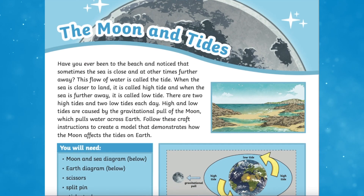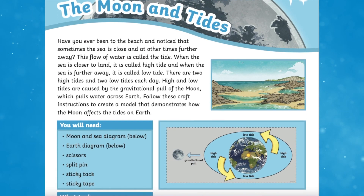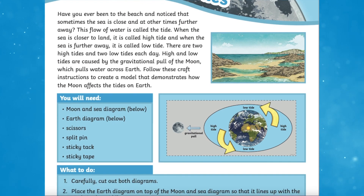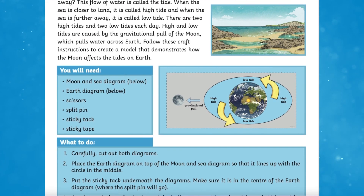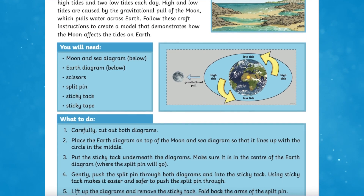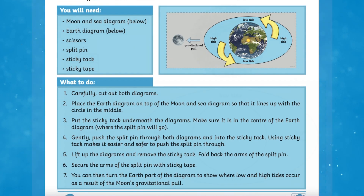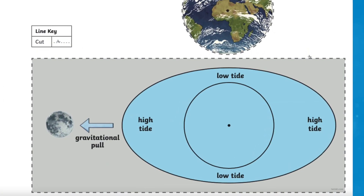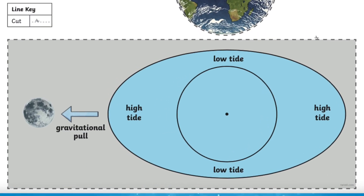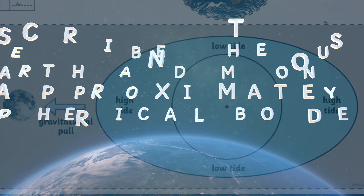This moon art Key Stage 2 craft activity helps children to understand the link between the moon and the tides on earth. Children can follow the craft instructions to demonstrate where on earth low and high tides occur.